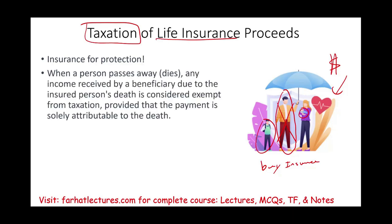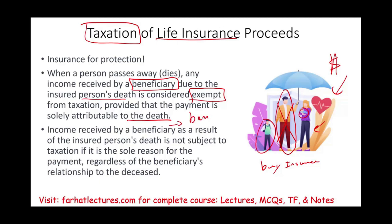So when a person does pass away, any income received by the beneficiary — who could be the spouse or the children — due to the insured person's death is considered exempt. Simply put, that money is not taxable, provided that the payment is due to the death of that individual. Income received by the beneficiaries as a result of the insured person's death is not subject to any taxation, regardless of the beneficiaries' relationship to the deceased. The general rule is: if you receive the proceeds, they are not taxable, but there are other situations to discuss.